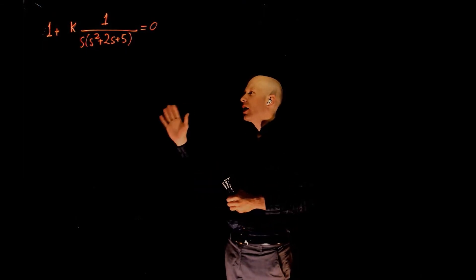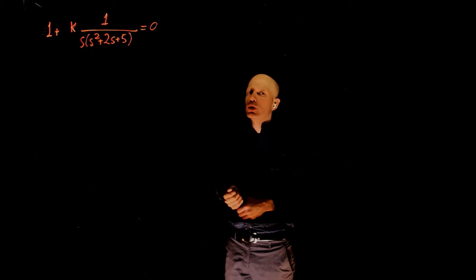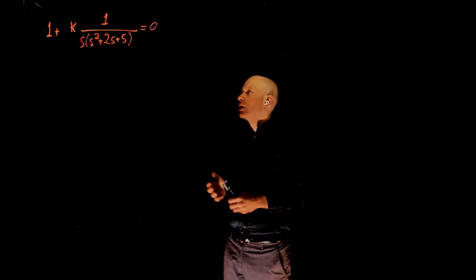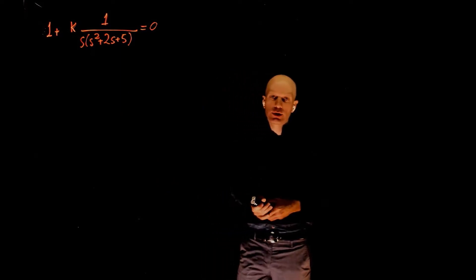In this last example, we again have a unit feedback loop, and this is the characteristic equation of the closed loop transfer function. Let's draw the root locus for k as k varies from 0 to infinity.